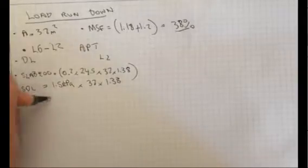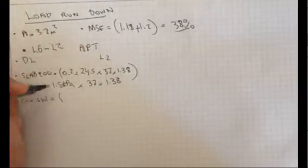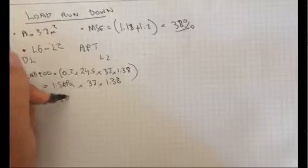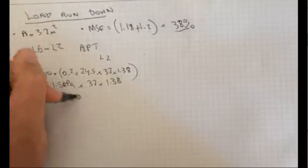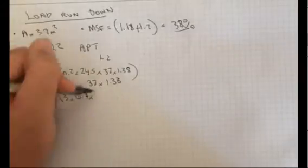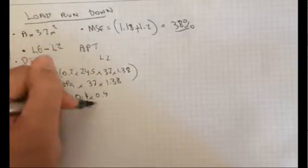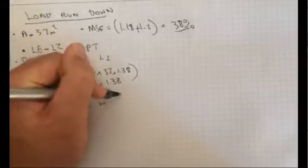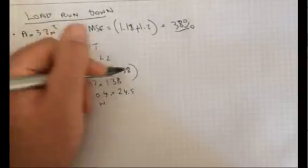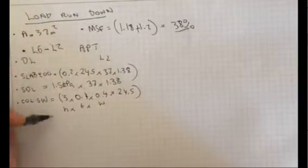On top of that, you're going to have the column self-weight. That's again maybe 3 meters floor-to-floor height for the apartment times, we'll make up a column size, roughly maybe 0.4 times 0.4—so that's B times W times H, that's the volume—times the density which is going to be 24.5 kPa.